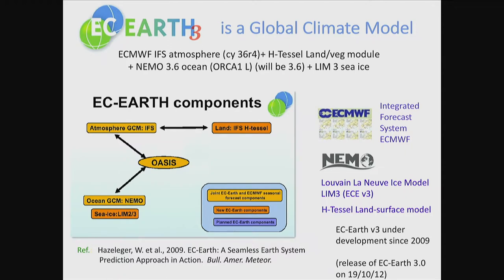EC-Earth is mainly a global climate model. It's quite a recent one in the sense that development started basically 10 years ago, in 2006 or 2007 the first idea came out. It was the first version, EC-Earth 2. The current version we are working on is version 3, EC-Earth 3.0, which was released in 2012.